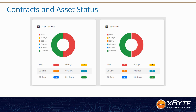One important part to note on the dashboard is the contracts and asset status icons. These highlight current and expired contracts by days until expiration. It will highlight those assets expiring within 90, 60, and 30 days to allow you to plan for renewals or the refresh of equipment.